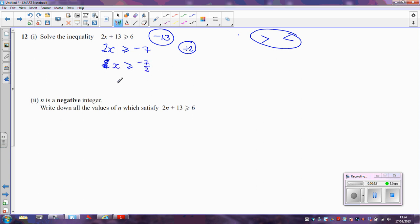2x divided by 2, well that's just x. Minus 7 divided by 2, well I'll just write it like that to start with. That's just the same then as x is greater than or equal to minus 3.5, so that's the solution to the first part.